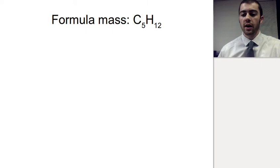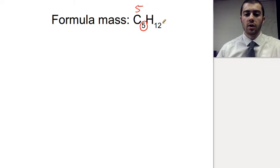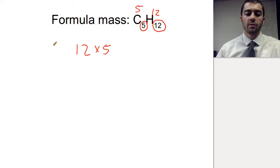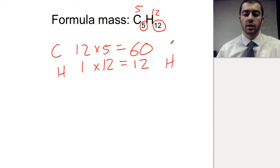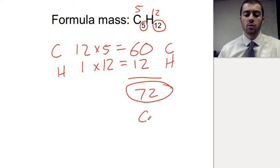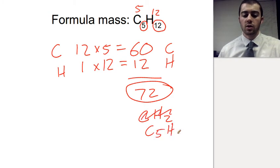Another example: C5H12. We have five carbons, because of this subscript, and 12 hydrogens. Carbon has a mass of 12; we have five of those, so we multiply by five and that gives us 60 for the total mass of carbon. Hydrogen has a mass of 1; there are 12 of those, so hydrogen contributes 12 total. Adding the parts together, we get 72 for the total formula mass of C5H12.